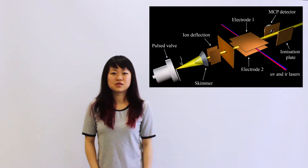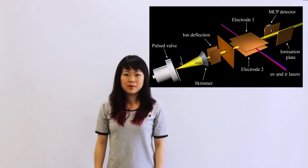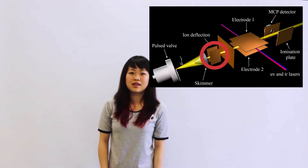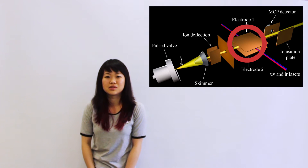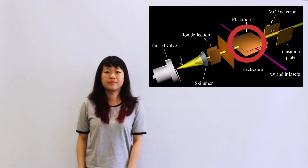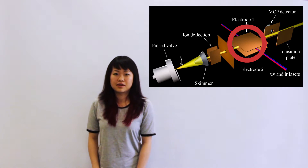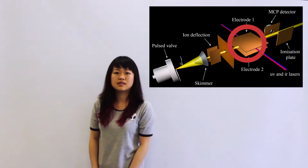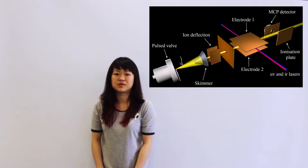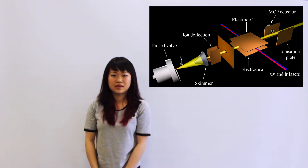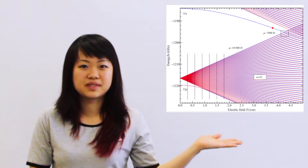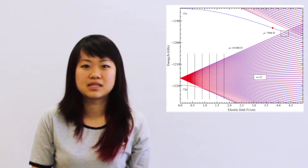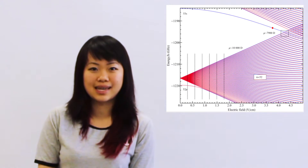The beam is passed through iron deflection plates. The electrodes excite the ground state helium atoms into highly excited Rydberg states, and the electrodes have a uniform electric field so that we can excite the atoms to a particular energy state. The resulting ions are collected on a microchannel plate detector. This diagram shows the energy splittings of a helium atom when it's excited into its Rydberg state.